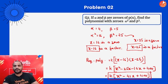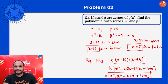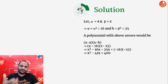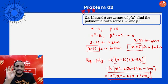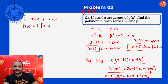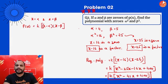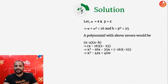This is how the question is solved — we use the factor theorem. If you're given zeros, you get the factors and multiply those factors to get the polynomial. Remember: if x = alpha and x = beta are zeros, then the polynomial will be k(x - alpha)(x - beta), where k is any non-zero constant.